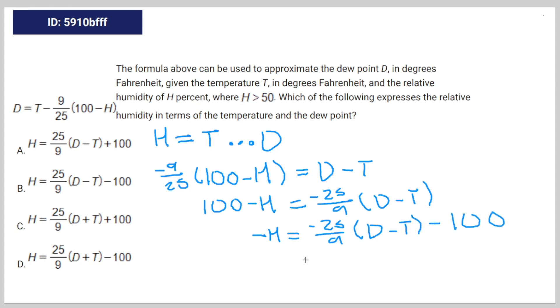Multiply both sides of the equation by negative 1. You're going to get H is equal to 25 over 9 times D minus T plus 100. Therefore the correct answer is A.